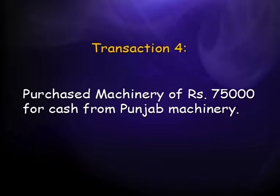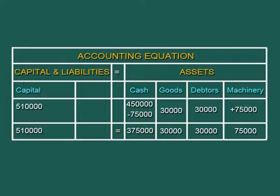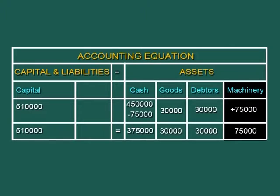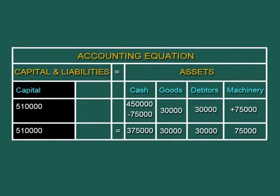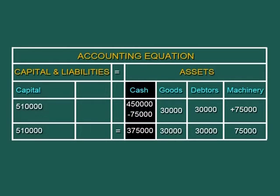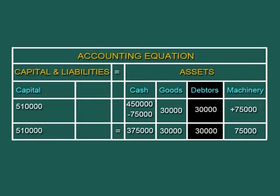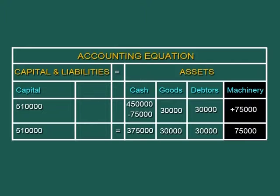Fourth transaction: purchase of machinery for rupees 75,000 for cash from Punjab Machinery. Machinery — a new asset — comes in, while cash decreases from rupees 4,50,000 to rupees 3,75,000. Capital remains intact at rupees 5,10,000, and on the asset side: cash 3,75,000, goods 30,000, debtors 30,000, and machinery 75,000 — all totaling rupees 5,10,000. The equation is balanced.